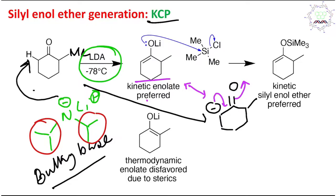This kinetic enolate is an ionic species, and it can be stored or trapped by reaction with trimethylsilyl chloride in the next step. The oxygen lone pair attacks the silicon center, and through a nucleophilic substitution-type reaction, the chloride leaves and produces the oxygen–silicon bond.